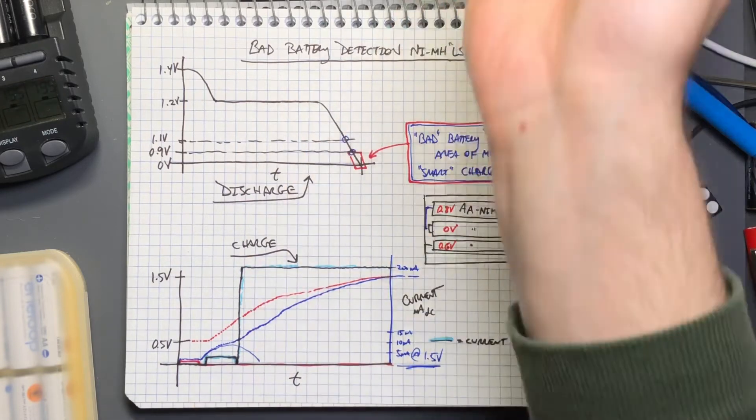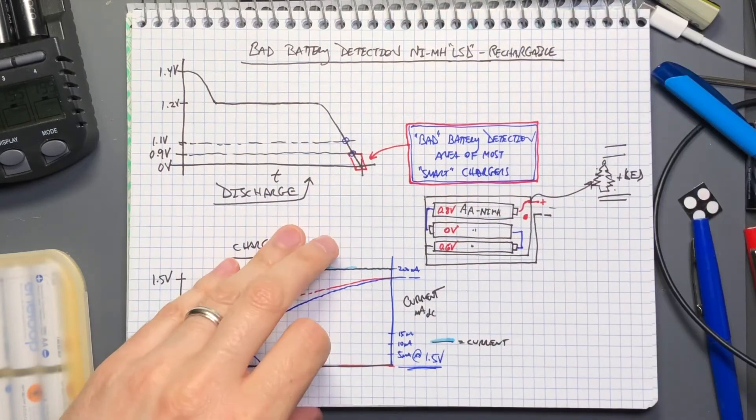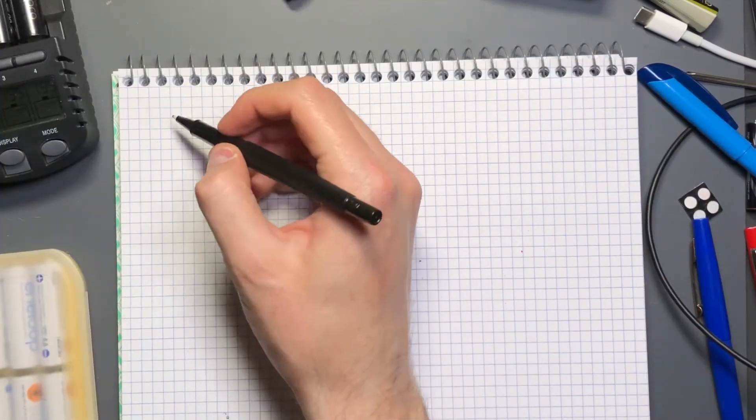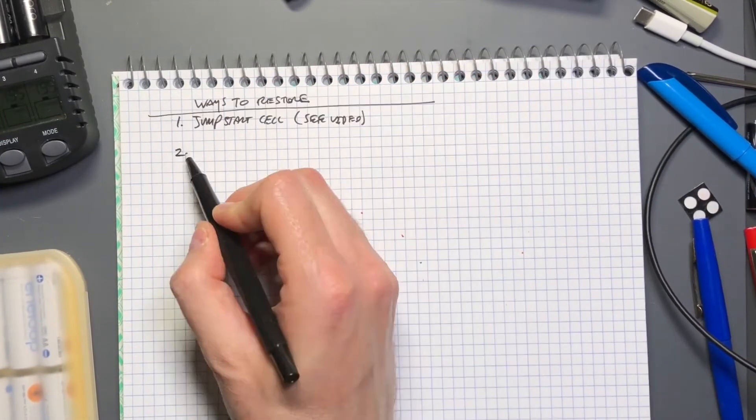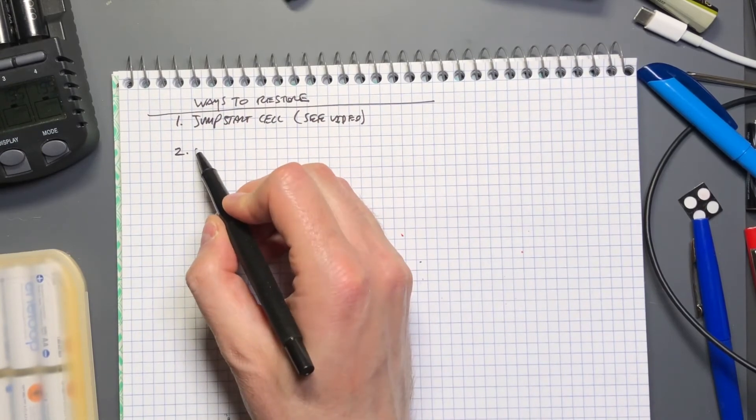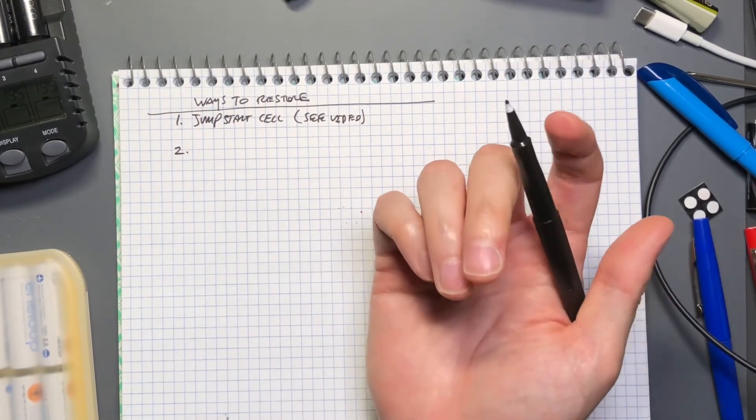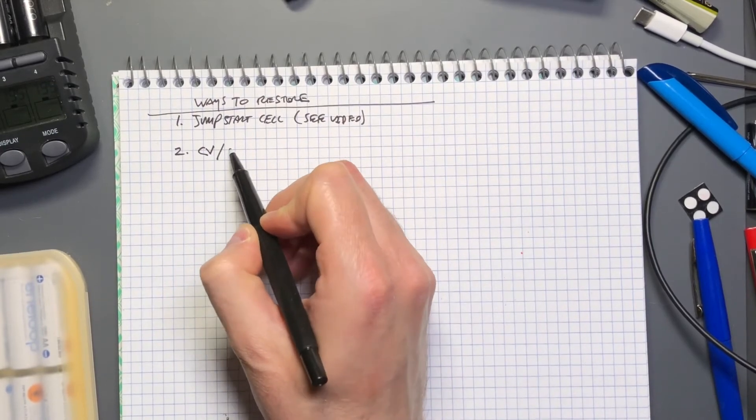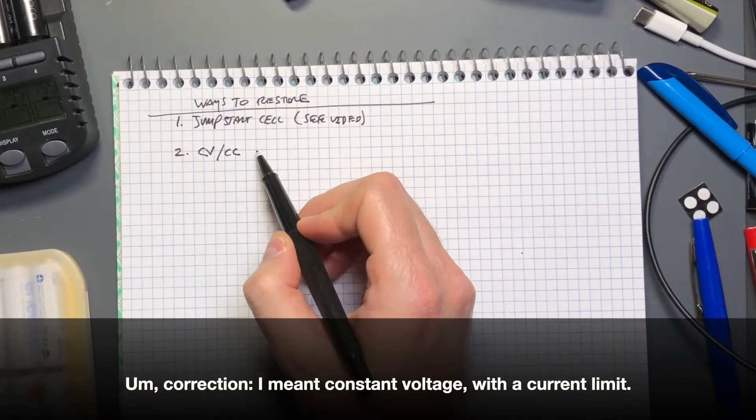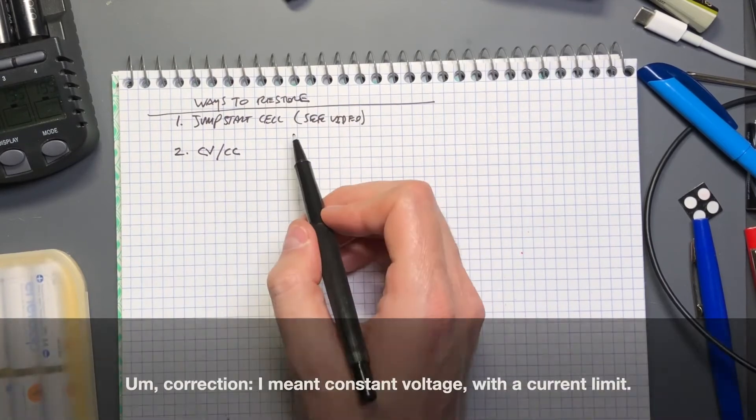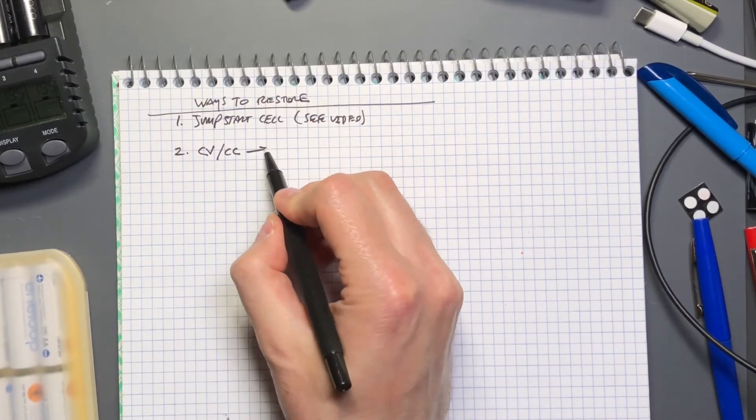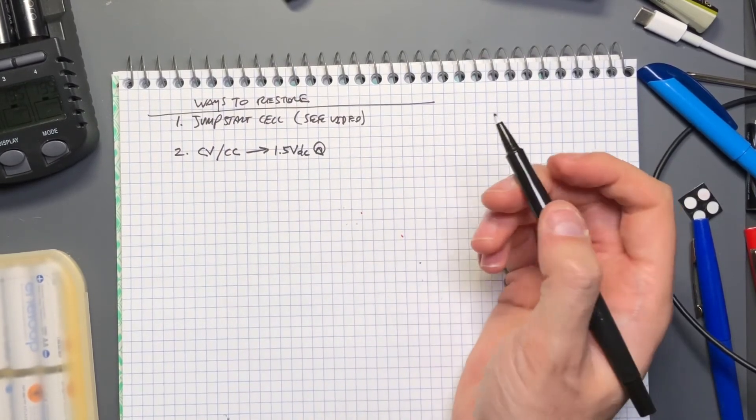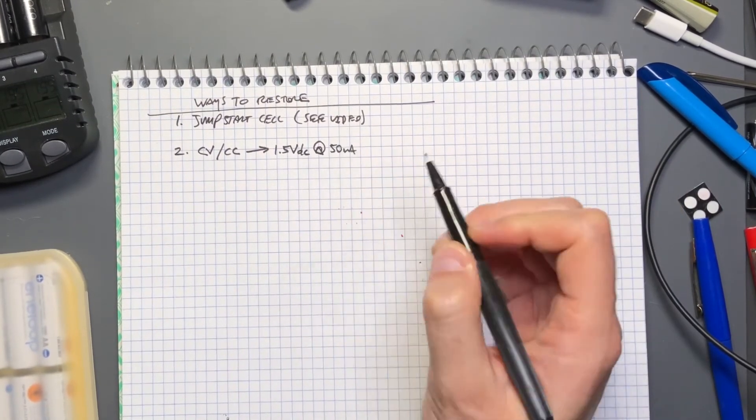Where does it leave us? It leaves us with taking matters into your own hands and somehow applying a voltage to the battery that you know is still in good shape. One is to watch the video that I link to. The second option is to look for some sort of variable power supply. Then you can apply a constant voltage constant current charge to the cell. I'd recommend you set it at 1.5 volts DC starting at 50 milliamps as your limit.